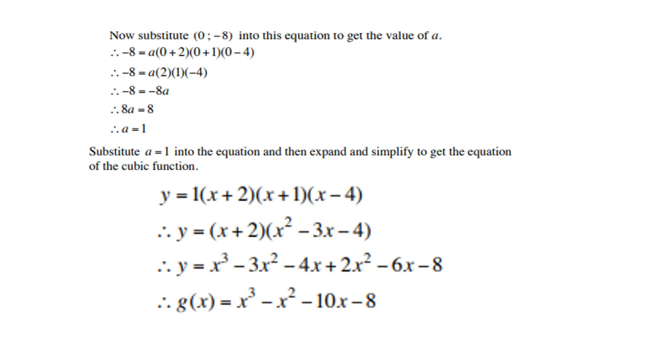Then we take the one and substitute into the equation. Next is to remove all the brackets, collect your like terms, and the final answer should be g(x) = x³ - x² - 10x - 8.